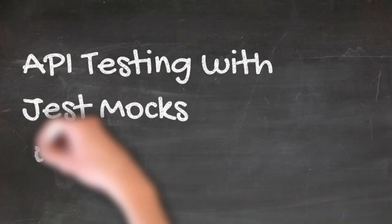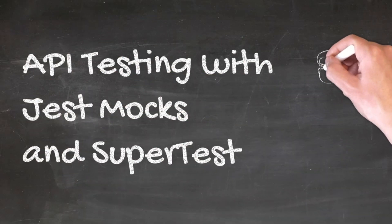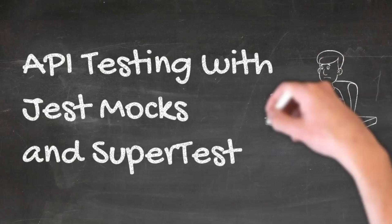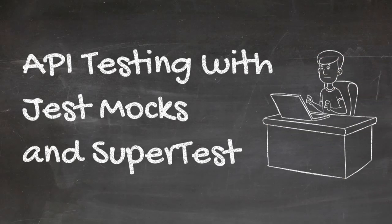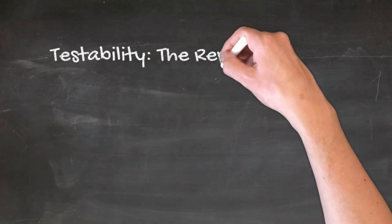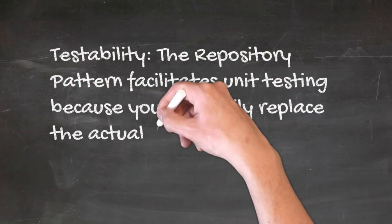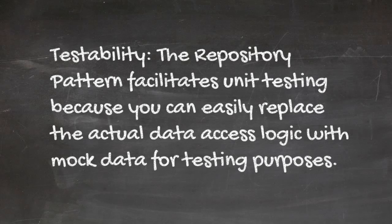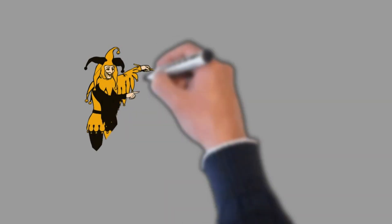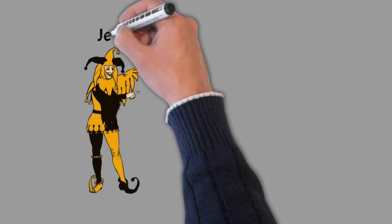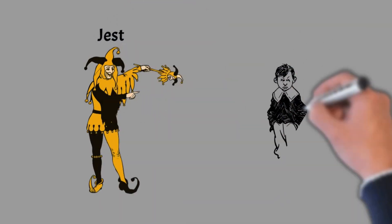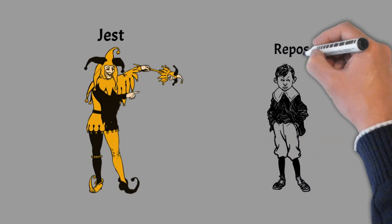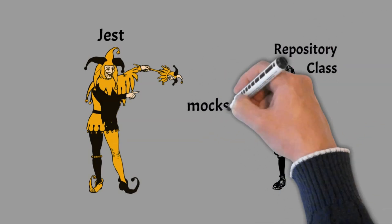In this video we will take a look at how to test Node.js API with Jest Mocks and SuperTest. In the last video we explored the repository pattern. One of the benefits of the repository pattern is testability — it facilitates unit testing because you can easily replace the actual data access logic with mock data. In our test code we will replace repository methods with Jest Mocks so we don't need the database for testing.